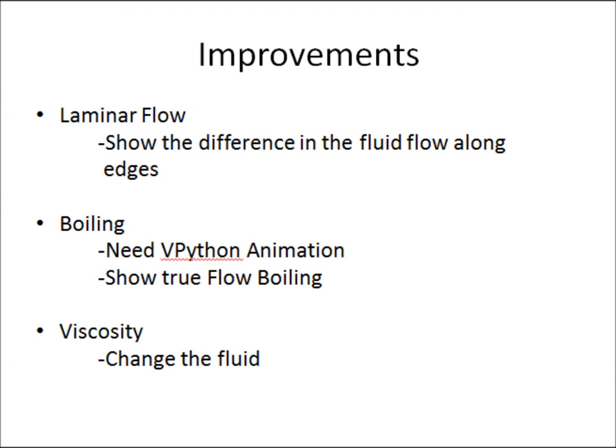There are still some improvements that can be made to make the solution more realistic. One improvement is to add laminar flow and show the fluid traveling at different velocities inside the tubing. Another improvement is to animate the process of flow boiling using vPython so we can compare it to the graphs made in Python, which would also help us see the heat transfer occur in real time. A final improvement would be to use the correct diffusion value to represent realistic fluids like water or FC72.